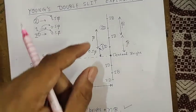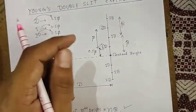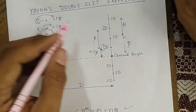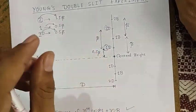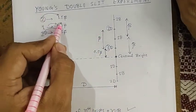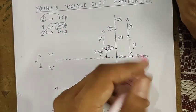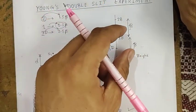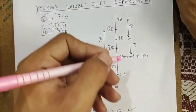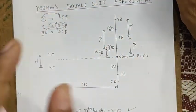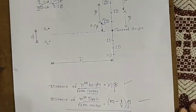This diagram is eventually very helpful. For bright: distance of nth bright from center = n·β. For dark: distance of mth dark from center = (m − 0.5)·β. These are the important formulas to keep in mind from the interference chapter. Thank you.